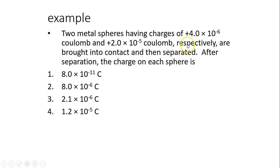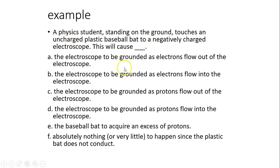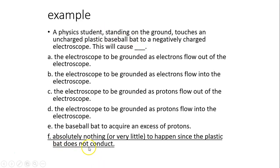Two metal spheres having charges of positive 4×10⁻⁶ and 2×10⁻⁵ coulombs respectively are brought into contact and then separated. Because they are identical, the charge on each sphere should be identical. How do you find the charge on each sphere? You simply add the two together and divide by 2 — find the average. So the answer is number 4; basically, they share the electrons. A physics student touching an uncharged plastic baseball to a negatively charged electroscope: plastic is not a conductor, so you cannot charge by conduction — absolutely nothing happens.